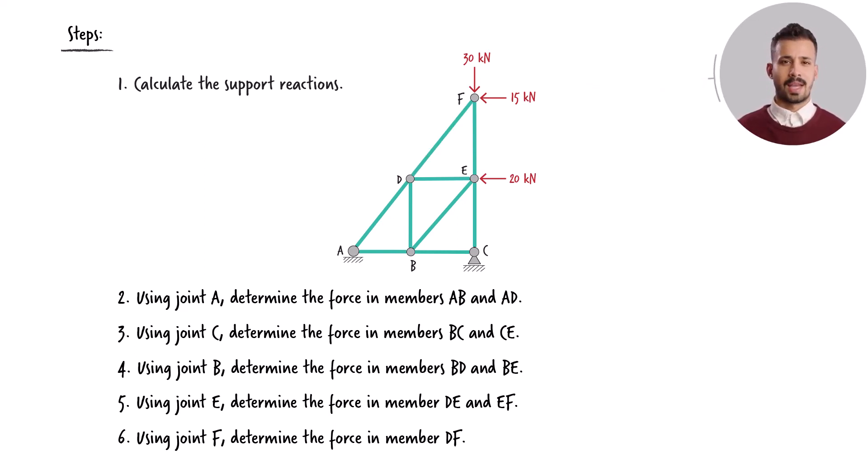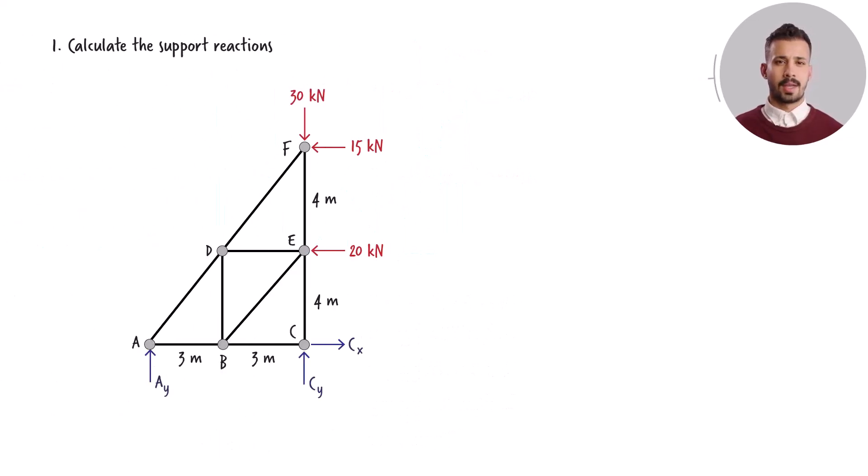To determine the support reactions, we begin by sketching the complete free-body diagram of the truss, which includes the forces exerted by the supports on the structure. For the purpose of writing the equilibrium equations, consider these directions as positive.